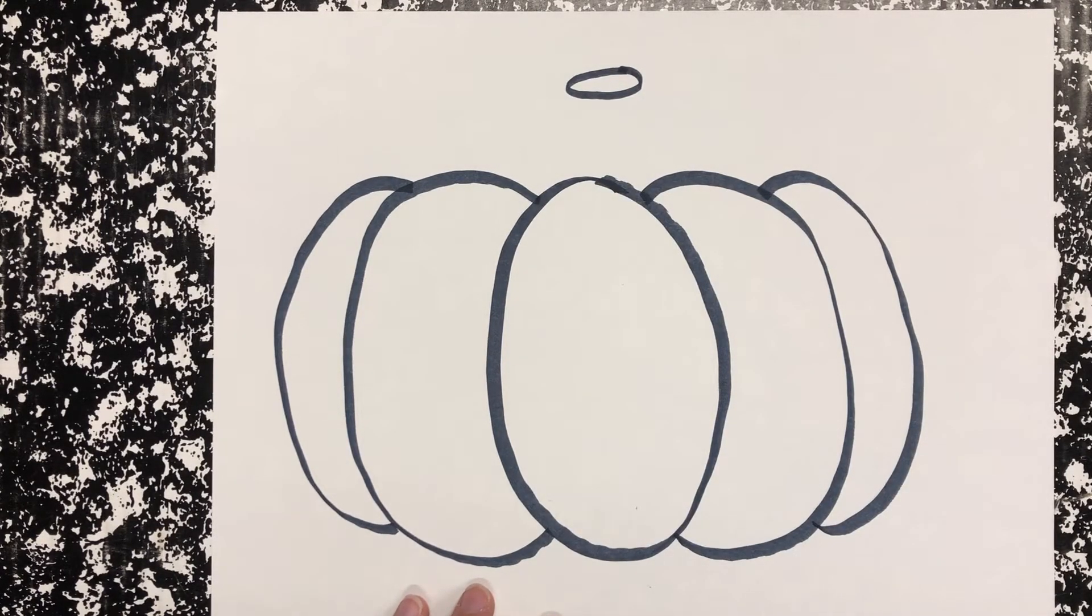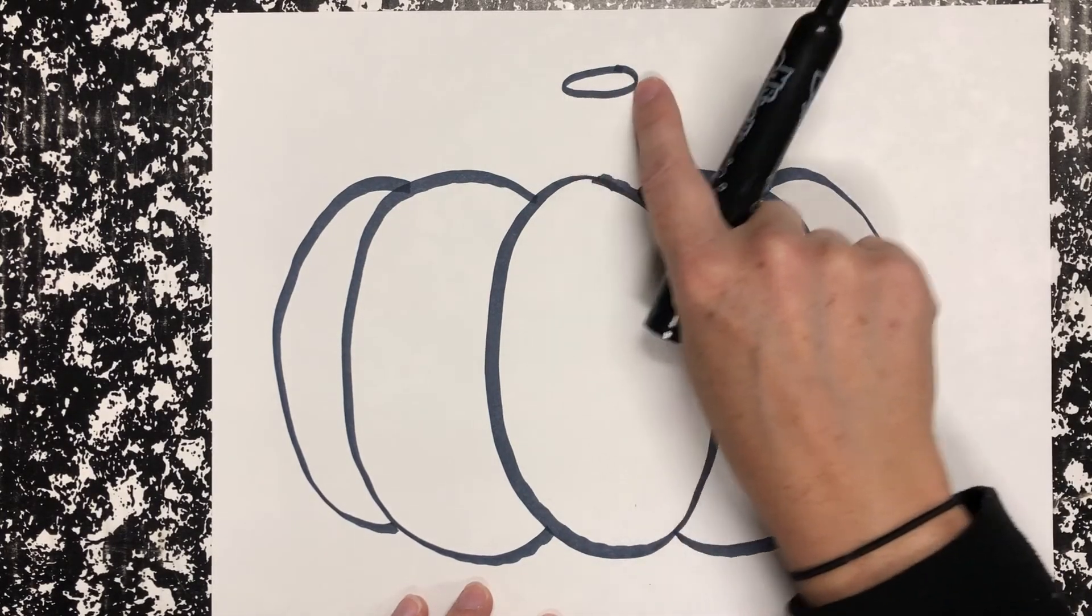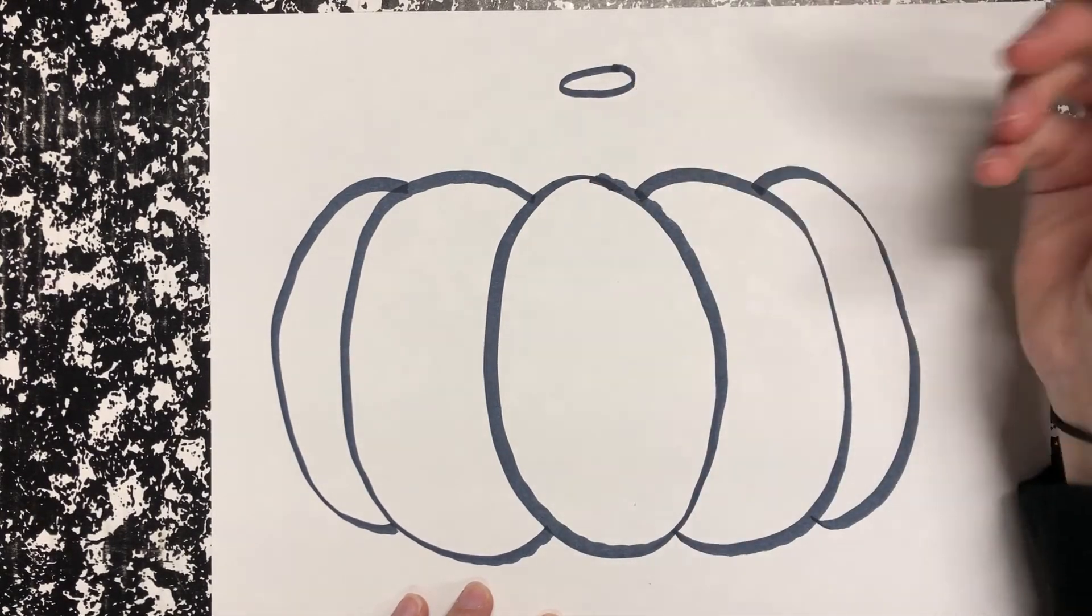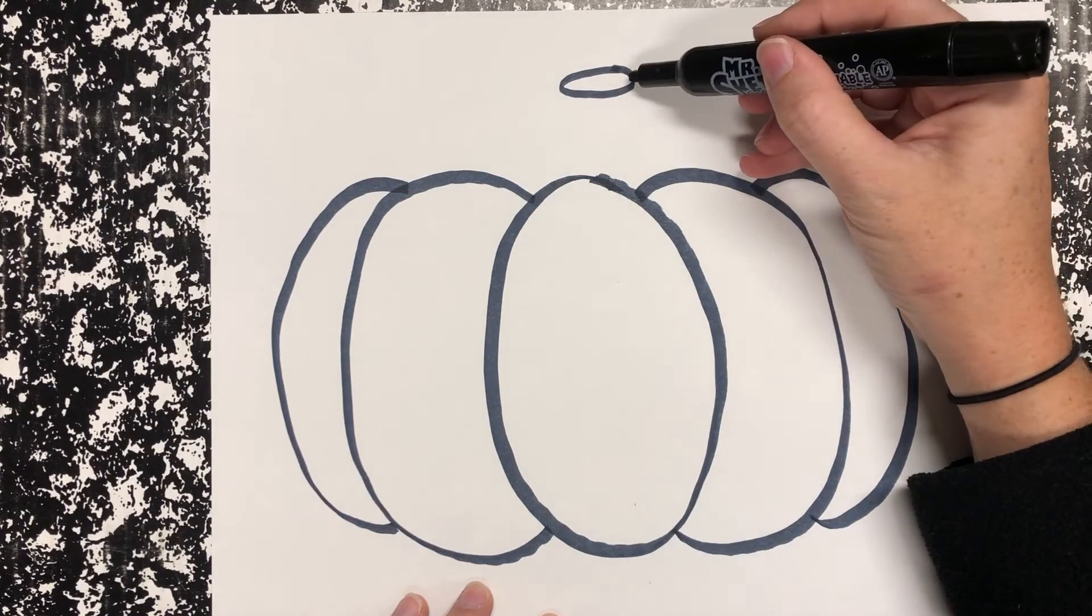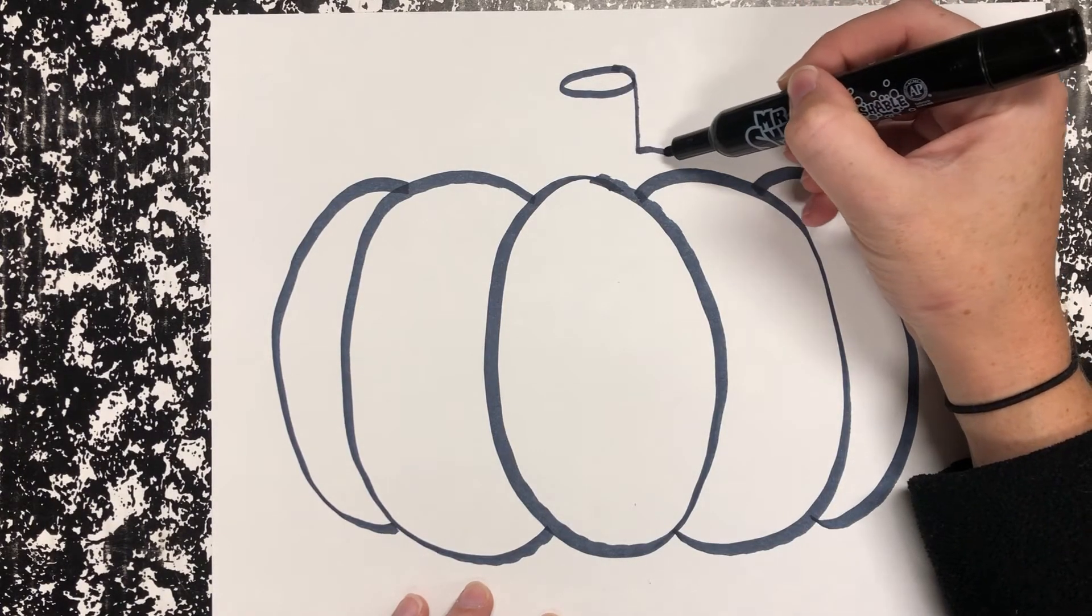Find the very edge of your oval. The very edge. You're going to come down and bump out.